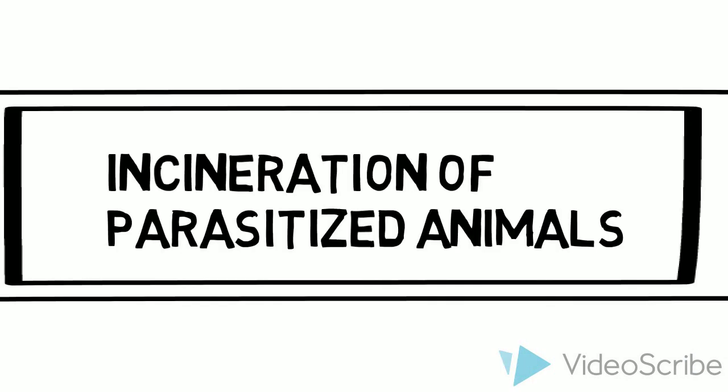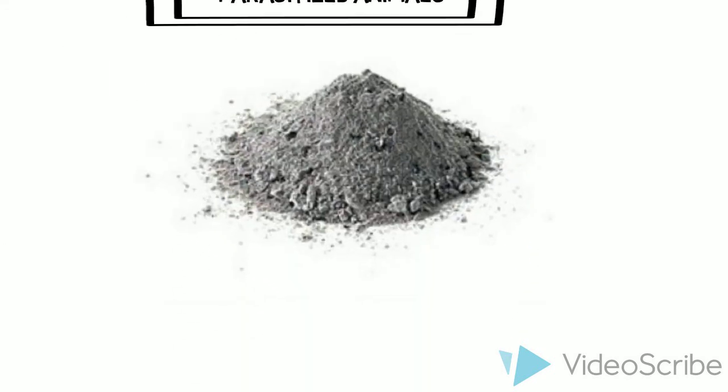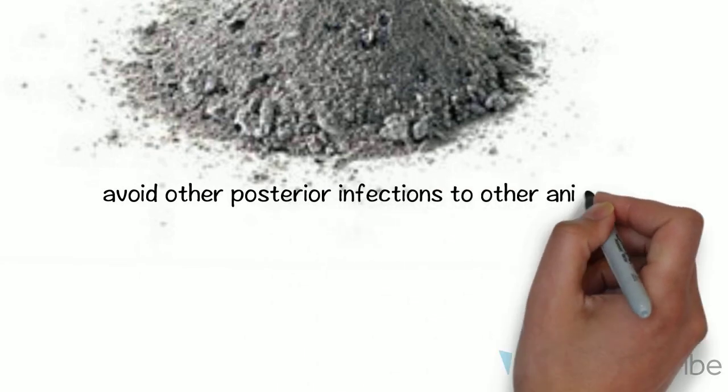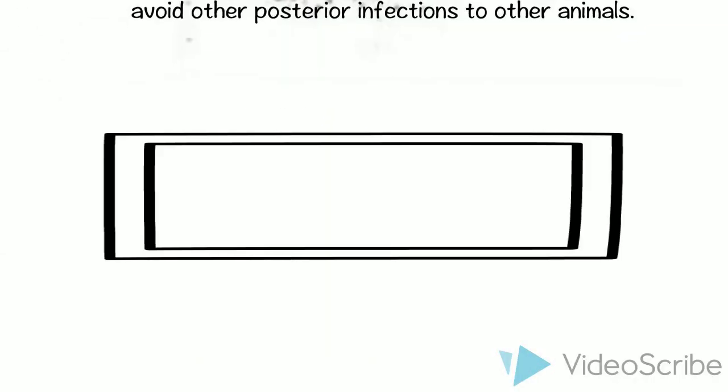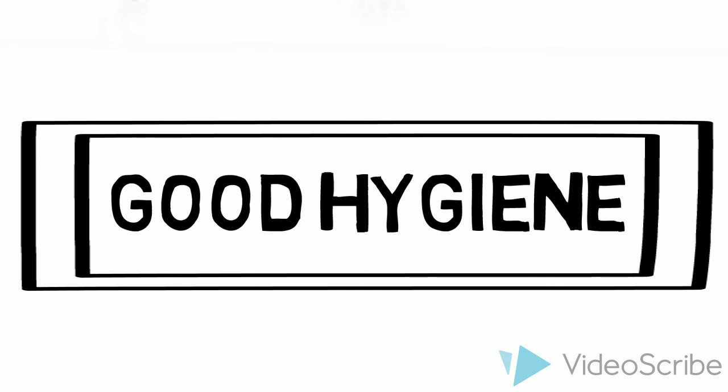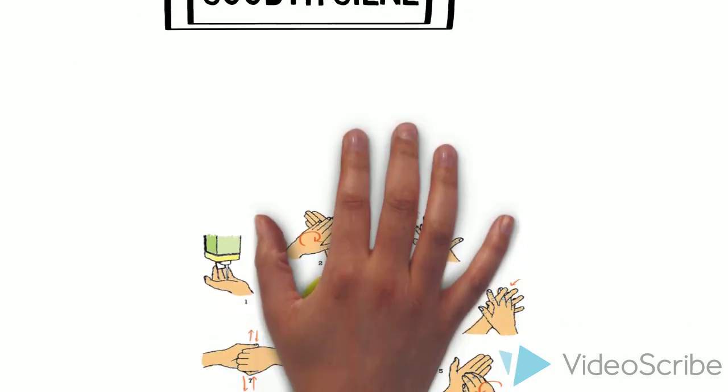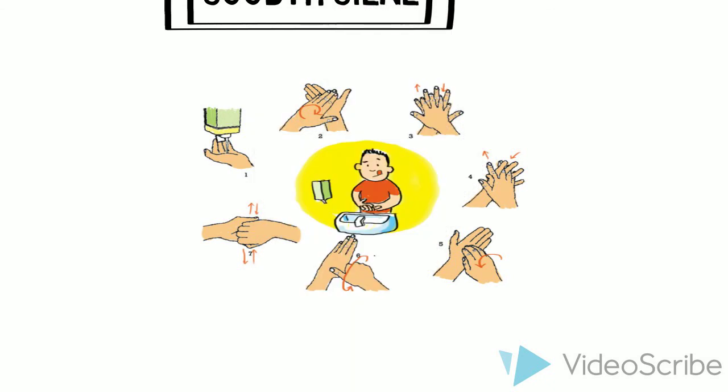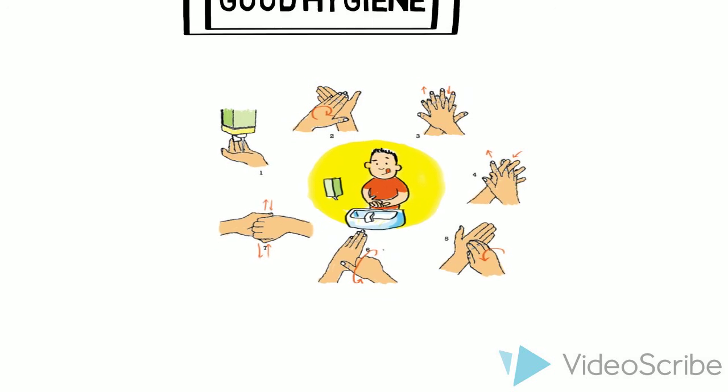Cremation of dead infected animals seems another interesting type of prophylaxis, as with this way we can avoid other posterior infections to other animals. Another good point is good hygiene. As we already mentioned, Trichinella can be kept in the hunter's hands and nails while he is carrying the game piece, or cutting it. It is therefore very important that we wash our hands adequately, like it is shown in the picture, taking very special care in our nails, as the parasite could stay there.